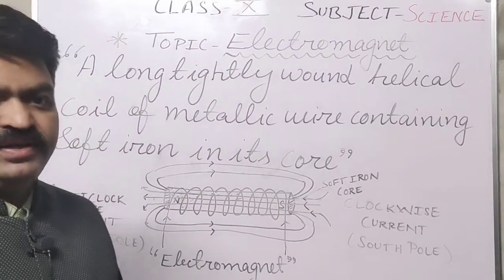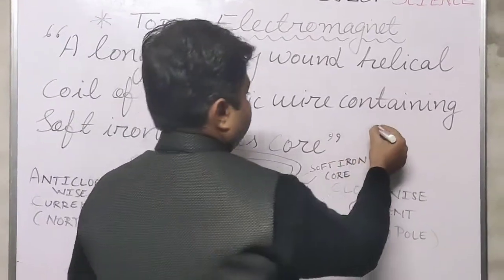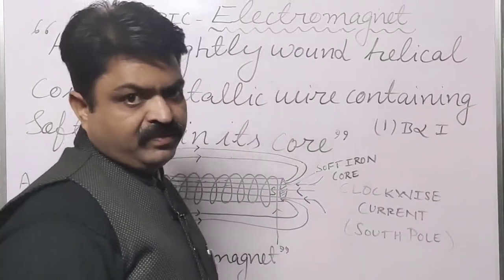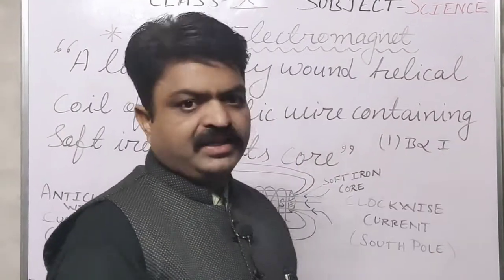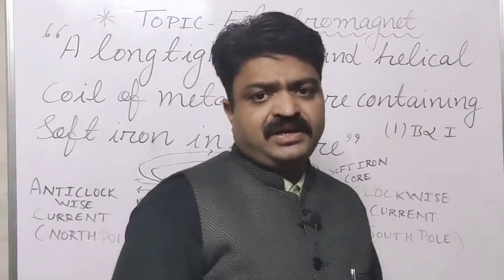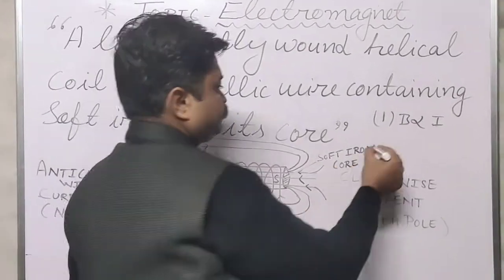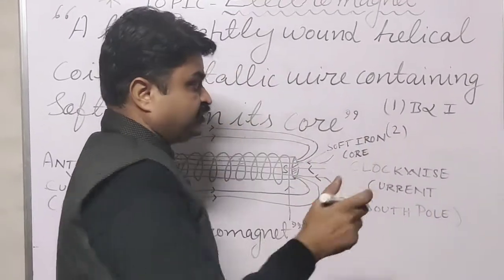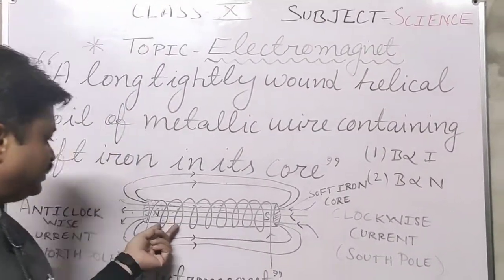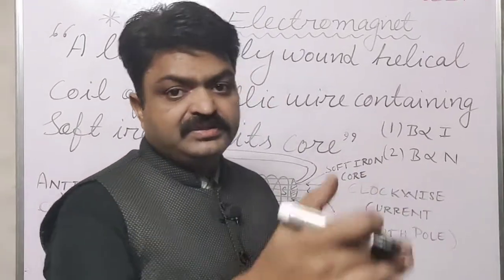Now we come to the factors on which the electromagnet depends. The first factor is electric current — the magnetic field is directly proportional to the electric current. As we have discussed with other conductors like the straight conductor, circular wire, and solenoid, if we increase the current, the strength of the magnetic field is also increased. The second factor is that it is directly proportional to the number of turns. If the turns are increased, the magnetic field is also increased.